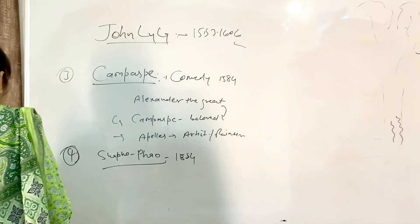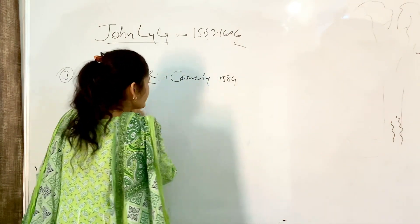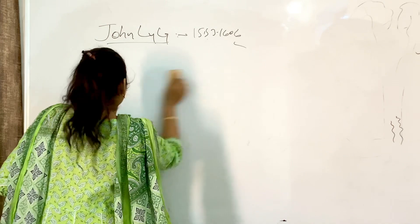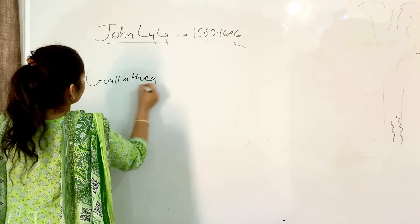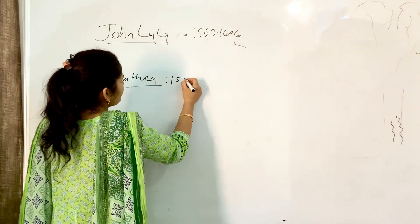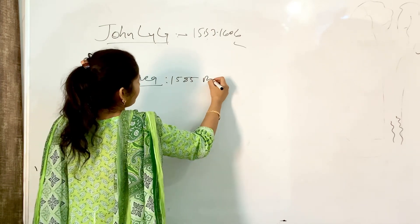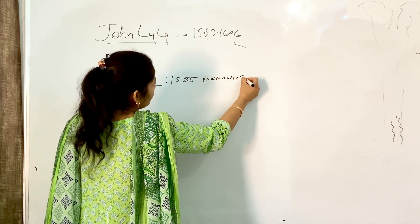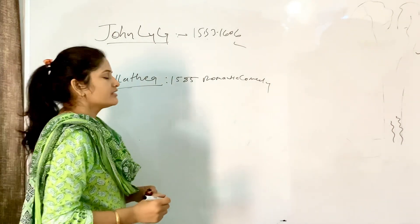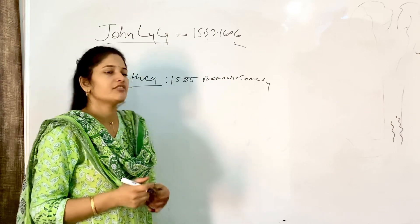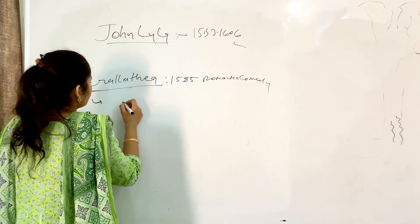Next is Galathea, also a romantic comedy. Galathea was published in 1585. Galathea is the main character and protagonist. Here is the god Neptune.